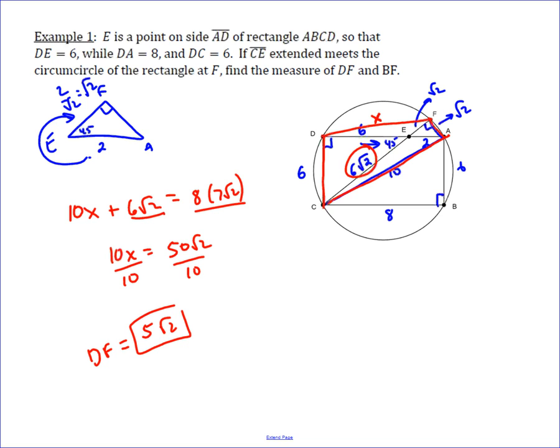And so this is a really nice application of Ptolemy's theorem. Well, once we know that's 5 root 2, we can apply Ptolemy's again. Let's erase this to give ourselves some space here, using DF this time. And this time we want to find BF, so let's go ahead and connect it up.